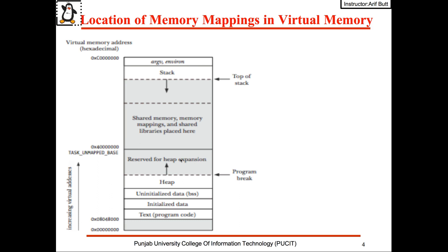This slide shows how a persisted file mapping works. This is the logical address space of a process, which we have discussed in our previous sessions. The area between the stack and the heap is reserved for shared memory, shared libraries, and memory mappings.